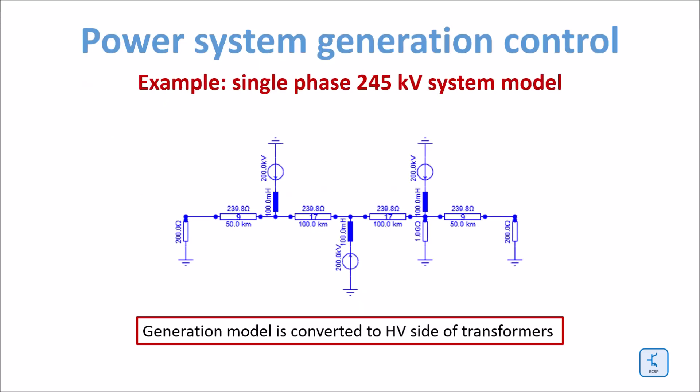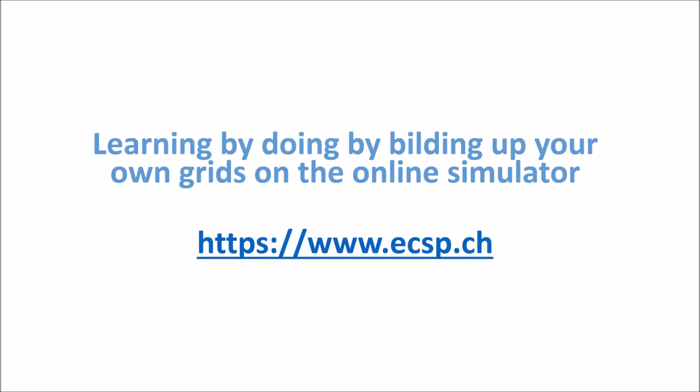For those of you who are close to the subject matter: in reality the synchronous reactance would be much larger, and therefore there would be another effect — depending on the load, the voltage at the terminal of the generator would drop and the automatic voltage generation control would increase the induced voltage. As usual, I recommend that you go to the simulator for learning by doing yourself. You can find the simulator under this address here. I wish you a lot of fun.